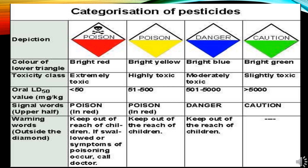The second group is highly toxic, with the color of the lower triangle being bright yellow and the overall LD level of 51 to 500. The signal word is 'Poison' in red, and the warning is likewise to keep out of reach of children. The third category is moderately toxic, with a blue lower triangle, an overall LD level of 501 to 5000, and the signal word 'Danger.' The fourth is slightly toxic, with a bright green lower triangle, an overall LD level of more than 5000, and the signal word 'Caution.'